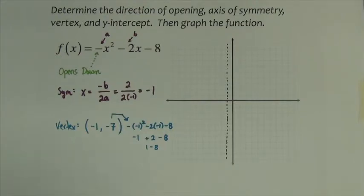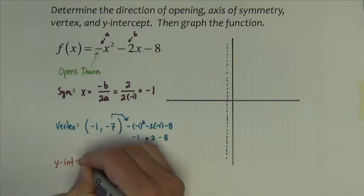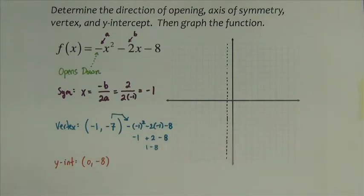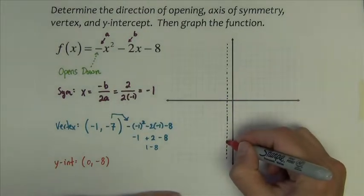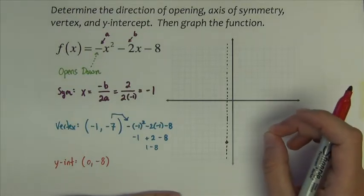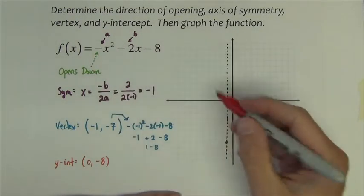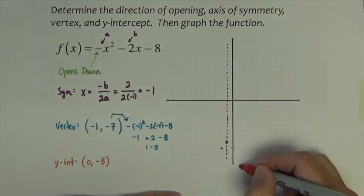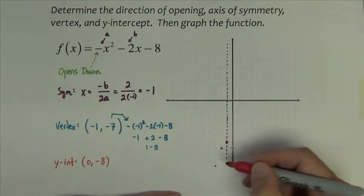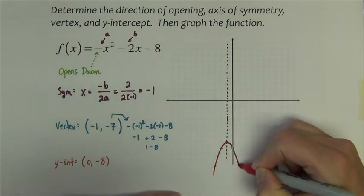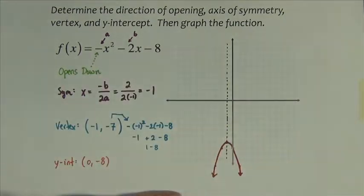And finally, we're asked for the y-intercept. The y-intercept should be the point 0 comma negative 8. Armed with all that information, we're ready to draw the graph. We start at negative 1, negative 7. From there, we know it goes down, and we use the squaring pattern: 1 squares to 1, 2 squares to 4 — that's a bit off the graph. So that's as far as we'll graph. There's the graph of this quadratic function.